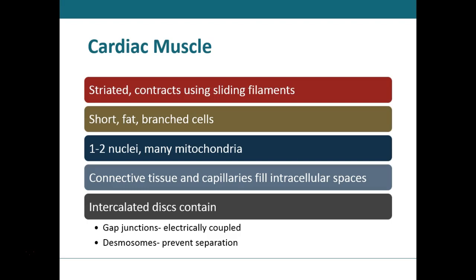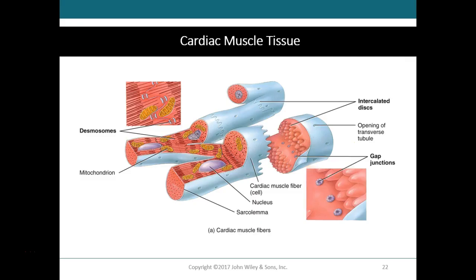Remember, from the time your heart forms until the day you die, these muscle cells are constantly contracting, so they're using a lot of ATP. You would expect to find a lot of mitochondria to make that high amount of ATP. There are connective tissues and capillaries that fill some of the spaces between the cardiac myocytes. Something that cardiac muscle has that no other muscle in the human body has are called intercalated discs, which are made up of specialized structures called desmosomes and gap junctions. Desmosomes form little spot welds between cells.